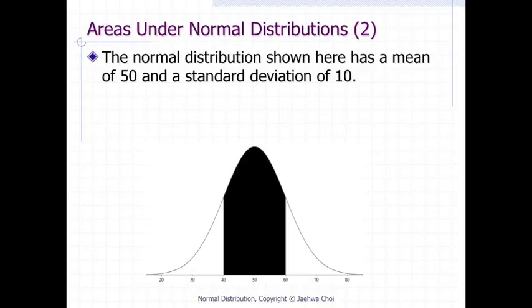This figure shows a normal distribution with a mean of 50 and a standard deviation of 10. The shaded area is the area from one standard deviation below the mean, 50 minus 10 equals 40, to one standard deviation above the mean, 50 plus 10 equals 60.